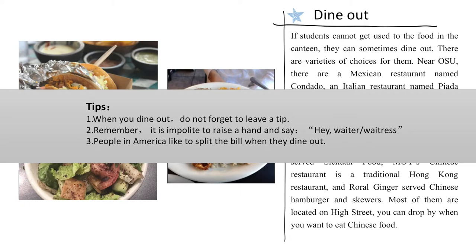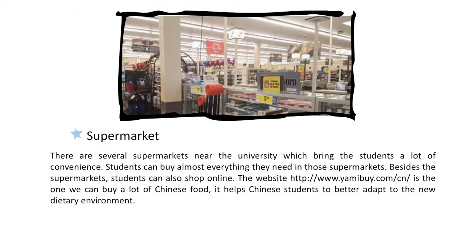Here are some tips for dining out. First, do not forget to leave a tip, which is very different from what we do in China. Second, remember it is considered rude to raise a hand and say 'hey, waiter or waitress.' Third, people in America like to split the bill when they dine out. The third choice is the supermarket — there are several supermarkets near the university, and students can also shop online. The following website is one where you can buy a lot of Chinese food.